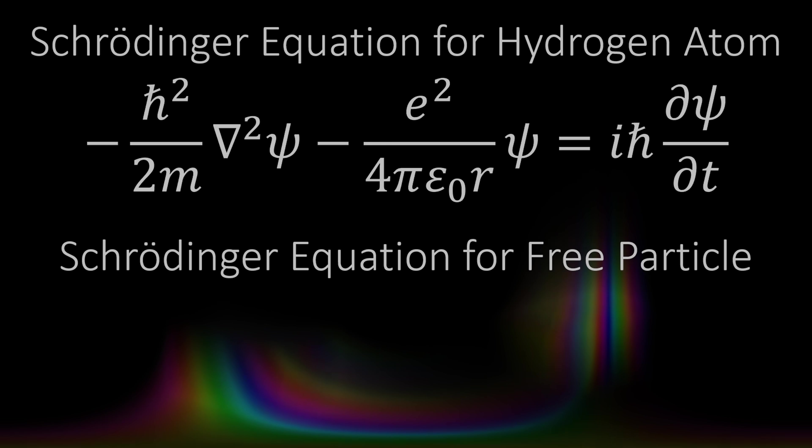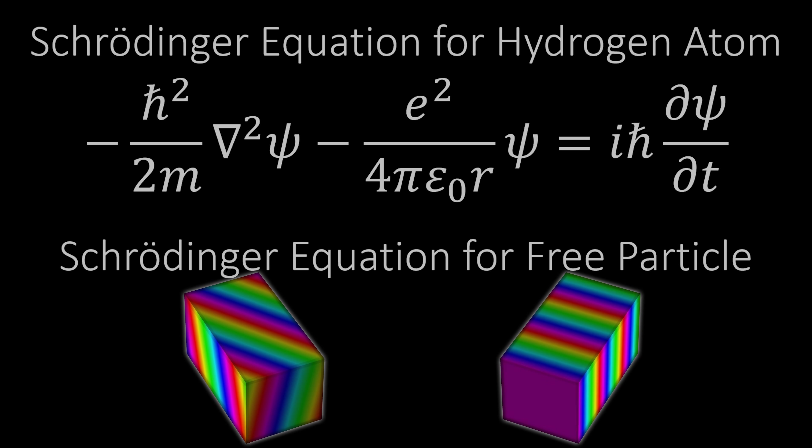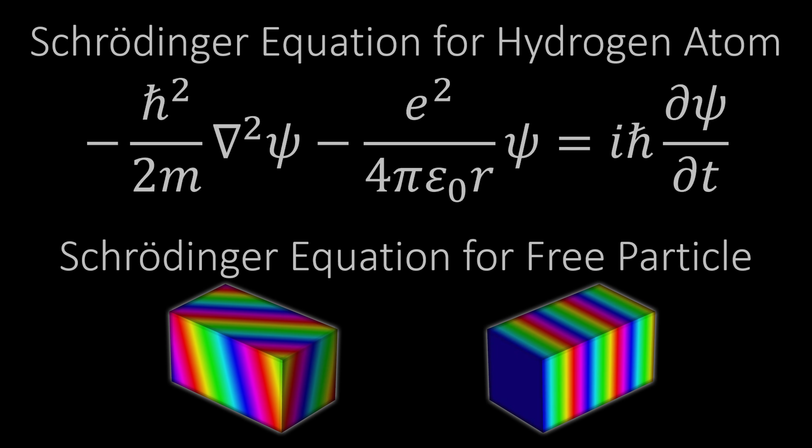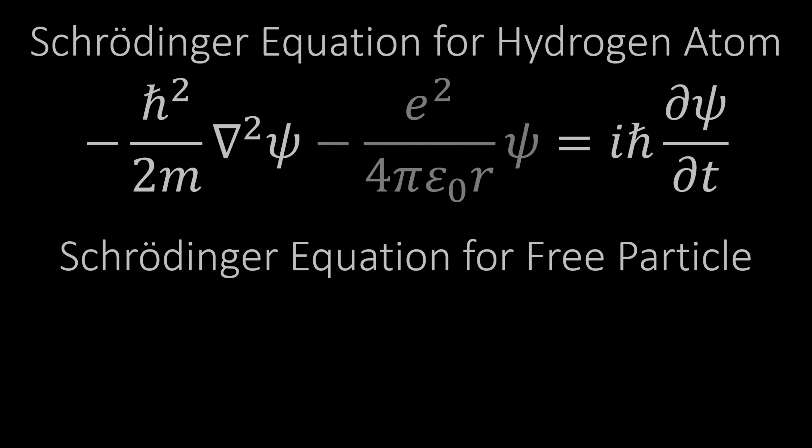To get that, all we have to do is delete the electrostatic potential term in the equation—that e² over 4πε₀r times ψ—just delete that and the electron will be released from the grip of the proton.